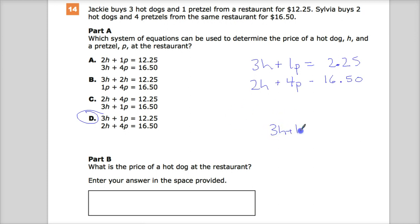For instance, 3h plus 1p. I'm just going to get the price of pretzels by itself. I realize that this should be a 12. I don't know what happened there. Subtract 3h from both sides, and you get p is equal to negative 3h plus 12.25.